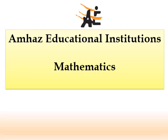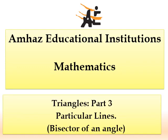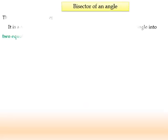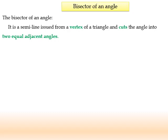Good morning, dear. Today we will talk about the bisector of an angle. We discussed it before as a separate lesson, but I will remind you what we mean by bisector and see some examples before moving to another idea. As a definition, the bisector is a semiline issued from a vertex of triangle or angle and cuts the angle into two equal adjacent angles.